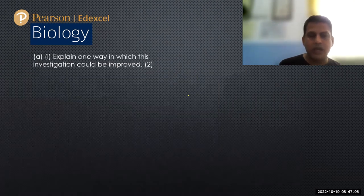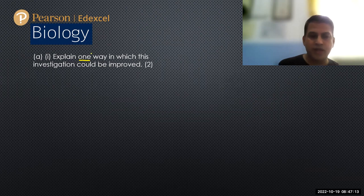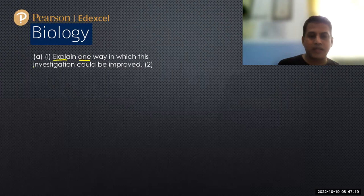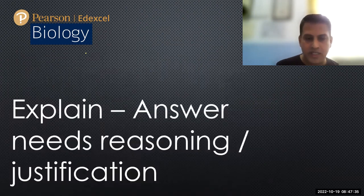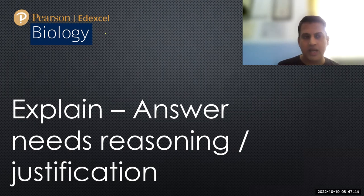The first question is: explain one way in which this investigation could be improved. So we have to make one improvement, and the question is 'explain,' so it carries two marks. We give one improvement and we have to justify why that improvement is important, because as we know, explain-type questions require reasoning or justification. We need a reason to highlight when we write the answer.